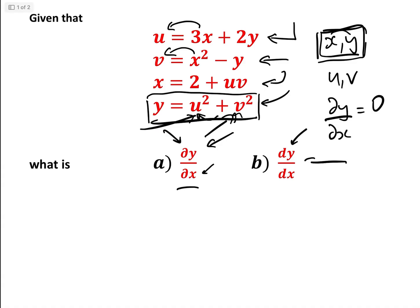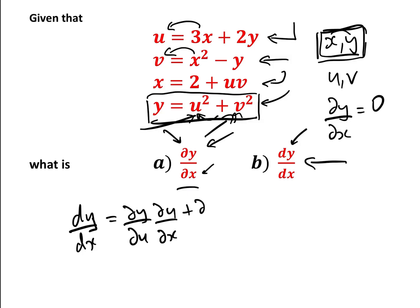Now what about the total derivative? Well, we want to know how y moves with respect to x in total. We can use the chain rule. So dy/dx total equals the partial differential of y with respect to u times du/dx, plus the partial differential of y with respect to v times dv/dx, plus the direct relation that y has moving with respect to x.